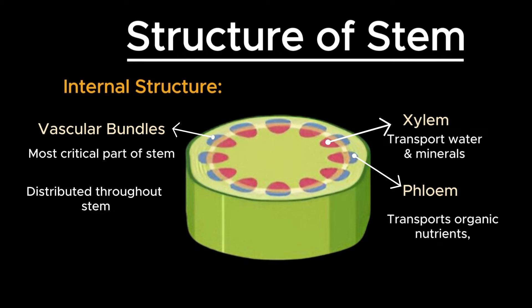Phloem transports organic nutrients, primarily sugars produced through photosynthesis, from the leaves to other parts of the plant. In dicots, phloem is located on the outer side of the vascular bundle.